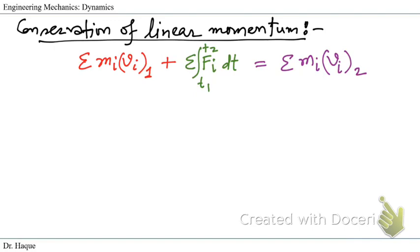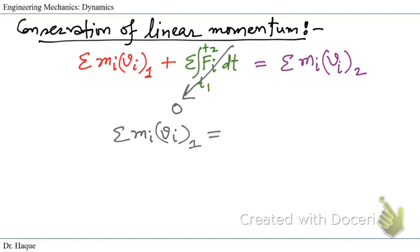For conservation of linear momentum, the key condition is that if there is no external or internal impulse, or if we can neglect them, the impulse term F·dt equals zero. We are then left with: summation of m_i·v_i1 equals summation of m_i·v_i2. This is the conservation of linear momentum equation.